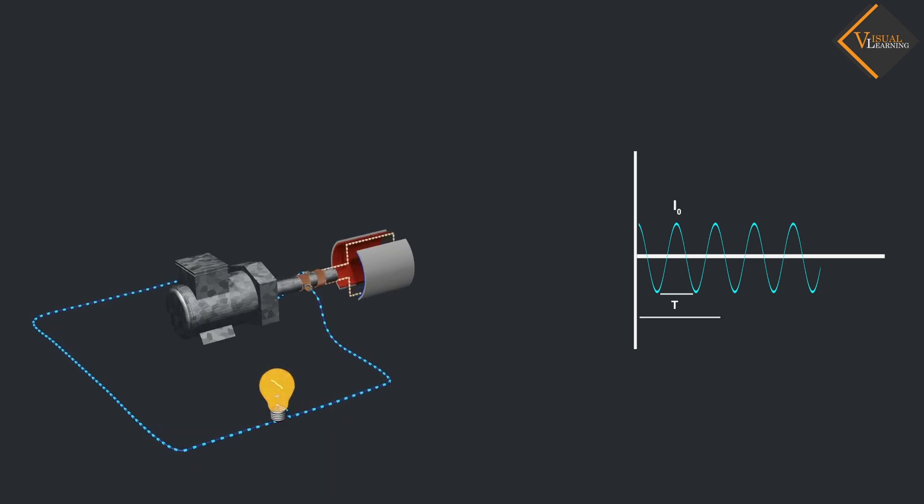This wave completes many cycles in one second, and the number of cycles completed in one second is called the frequency. We denote it as F. We represent the frequency as F is equal to 1 upon T.